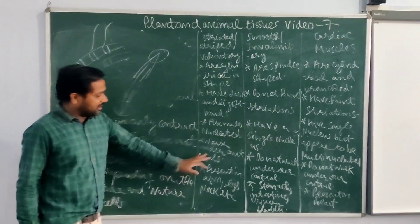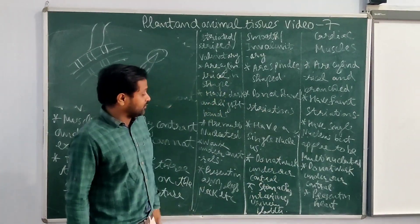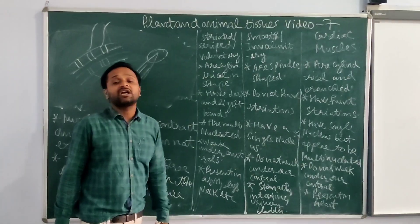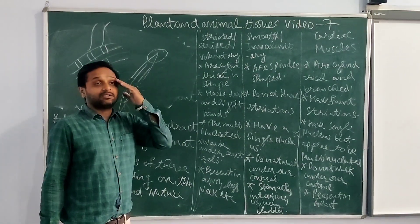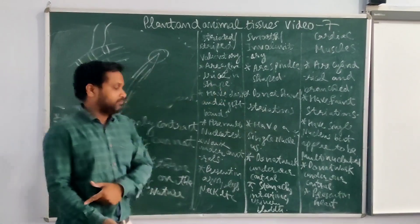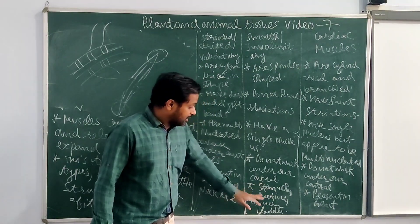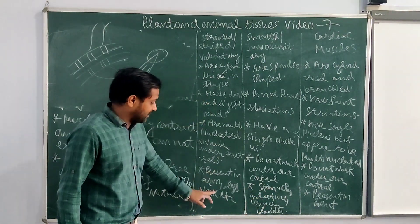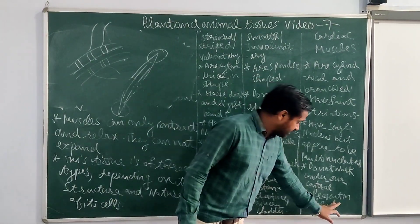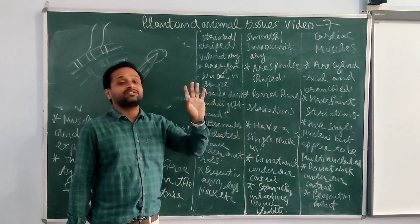Voluntary muscles work under the control of the brain. Smooth muscles do not work under our control, and cardiac muscle is also not under our control. For example, voluntary muscles like those in the legs — you think first, then you move; the brain sends a message to the muscle. Smooth muscles are present in the stomach, intestine, and bladder. Cardiac muscle is present in the heart and works non-stop — when it stops working, then the person dies.